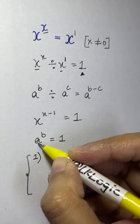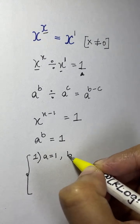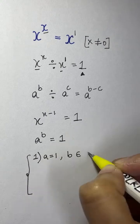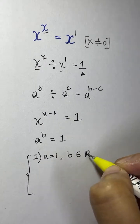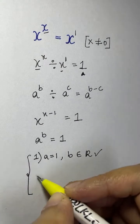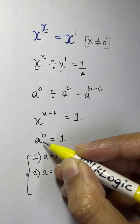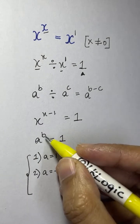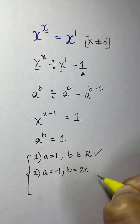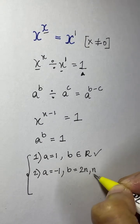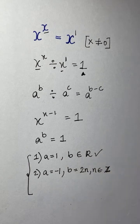The first condition: if a equals 1, then b belongs to the real numbers. So if x equals 1, b can be any real number — this is one condition. The second condition: if a equals negative 1, then b, which is x minus 1, must be an even number — that is, 2 times n, where n belongs to the integers.